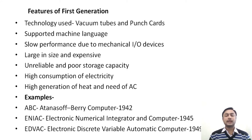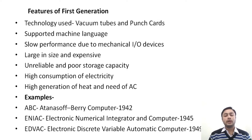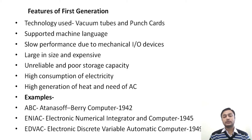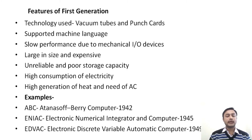Examples of first generation computers include the ABC (Atanasoff-Berry Computer), which was successfully tested in 1942. Then there was ENIAC — Electronic Numerical Integrated Computer — developed in 1945 (sometimes listed as 1946). Then EDVAC — Electronic Discrete Variable Automatic Computer — was developed in 1949.